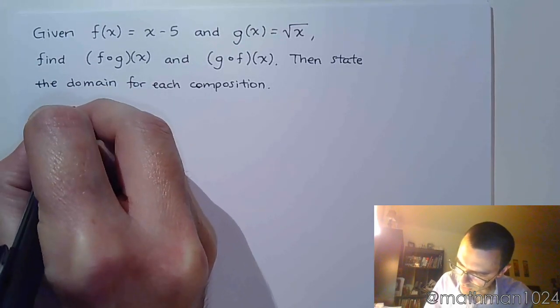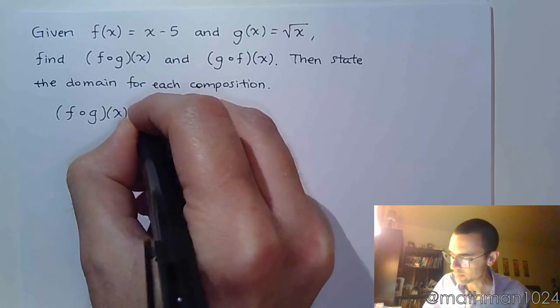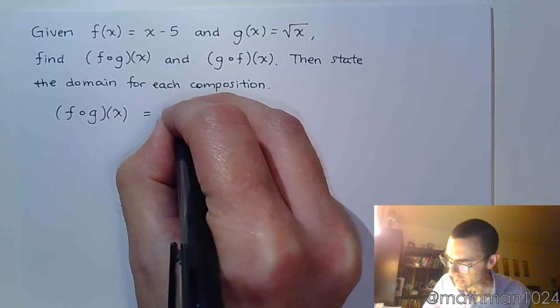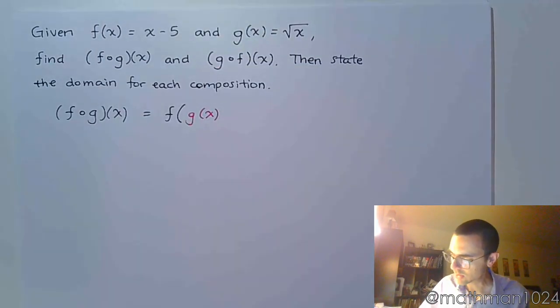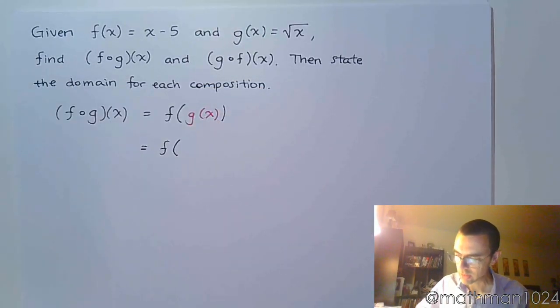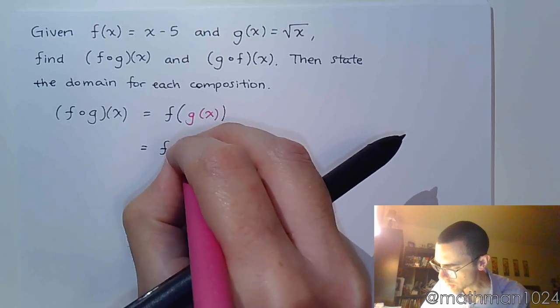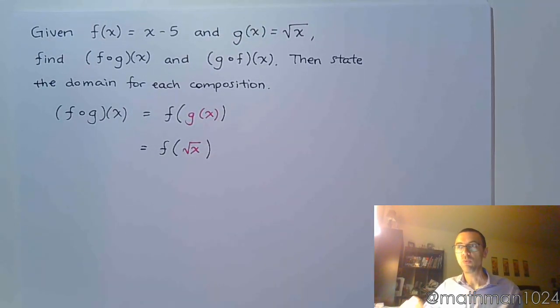So starting with f of g of x, that means f of g of x, like this. What is g of x? g of x is the square root of x. So what we're doing here is that we're plugging one function into another. We're not doing the different evaluations. It's like the pure form with the x's.